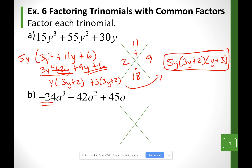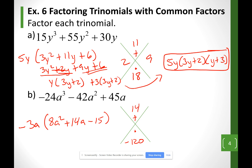Same thing with example B. I want my first number to be positive, so I'm going to factor out a negative 3. So I'm going to have 8a squared plus 14a minus 15 — remember, I factored out a negative number so my signs change. I'm looking for two numbers that when I multiply them is equal to negative 120, but when I add them is equal to 14. Factors of 120 — I want them to multiply to a negative so my signs are different. I'm thinking 6 and 20: positive 20 and negative 6. That's how I'm going to split my middle term.